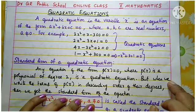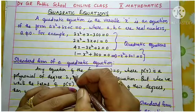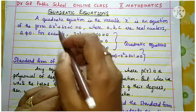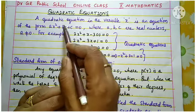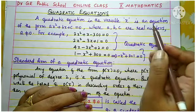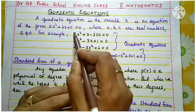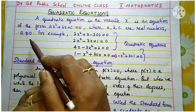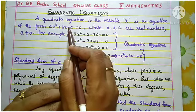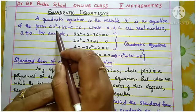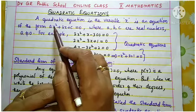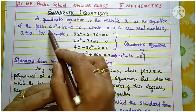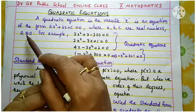Let us recall once again. A quadratic equation in the variable x is an equation of the form ax squared plus bx plus c equal to 0, where a, b, c are real numbers and a is not equal to 0. A quadratic equation is related to a quadratic polynomial, and we need the highest power of the variable to be 2. The coefficient a must not equal 0, otherwise the x squared term disappears.